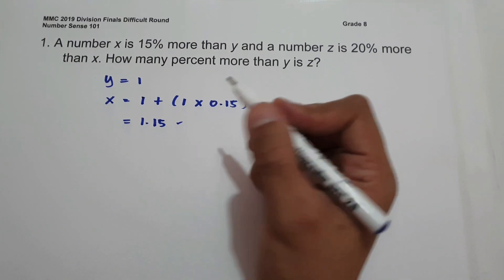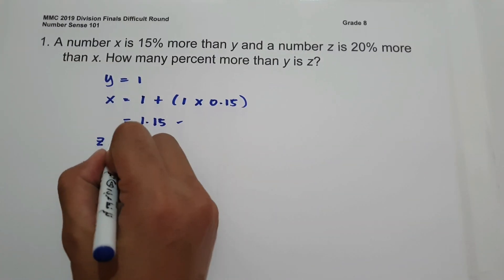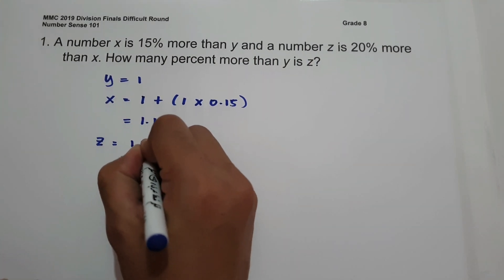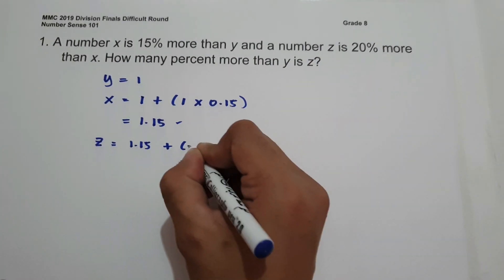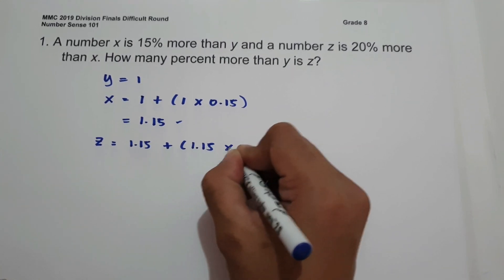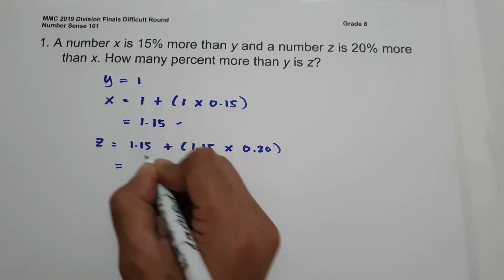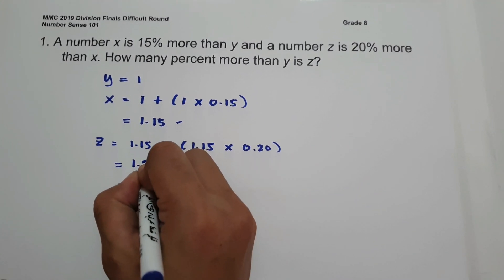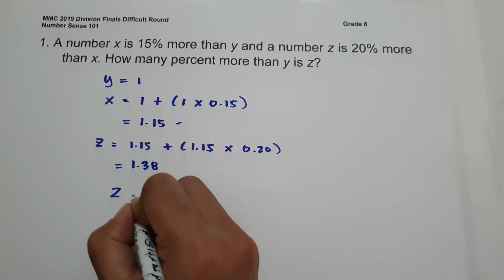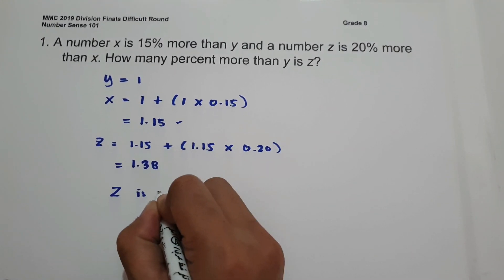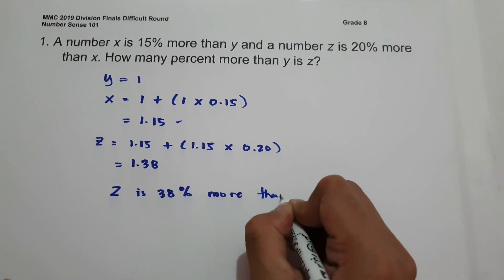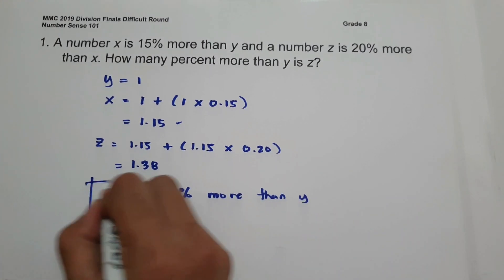What about the value of Z? The value of Z is 20% more than X. If X is 1.15, that is 1.15 plus 1.15 times 0.20, giving us 1.38. So therefore, Z is 38% more than Y. This will be our answer.